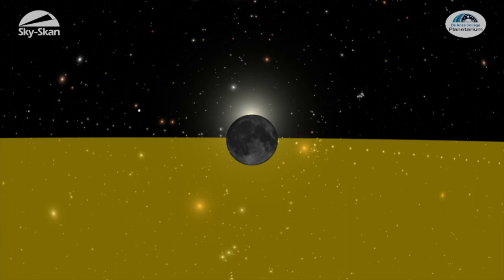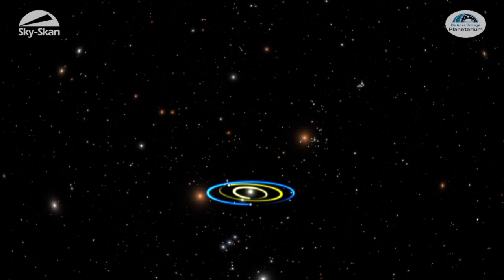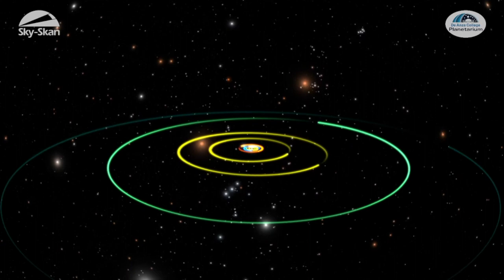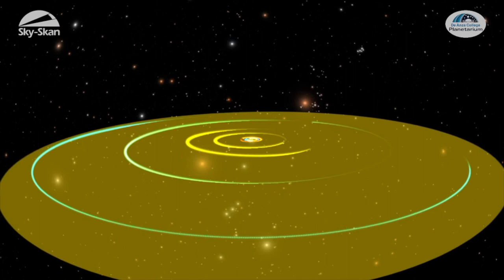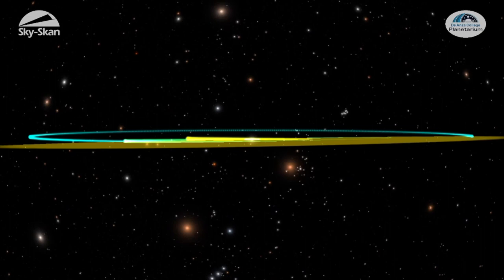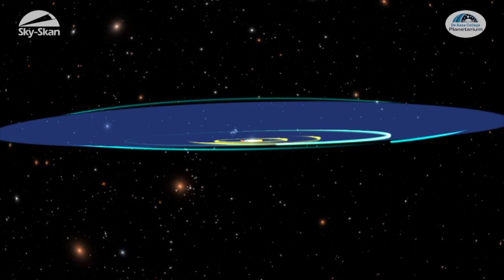If we back away to look at the entire solar system, we'll see that the orbits of the planets all fall more or less in line with the plane of the ecliptic. As seen from Earth, that means all the planets will appear close to the ecliptic in the sky, but usually a little bit above or a little bit below. You can see that the orbits of the planets line up almost perfectly with this ecliptic plane, but not quite perfectly.